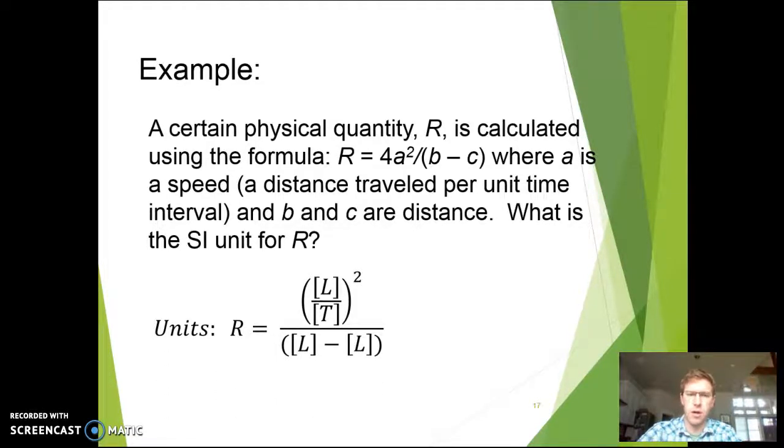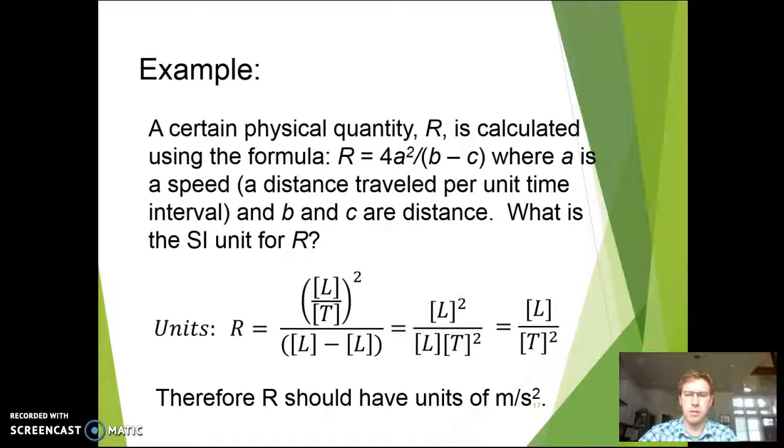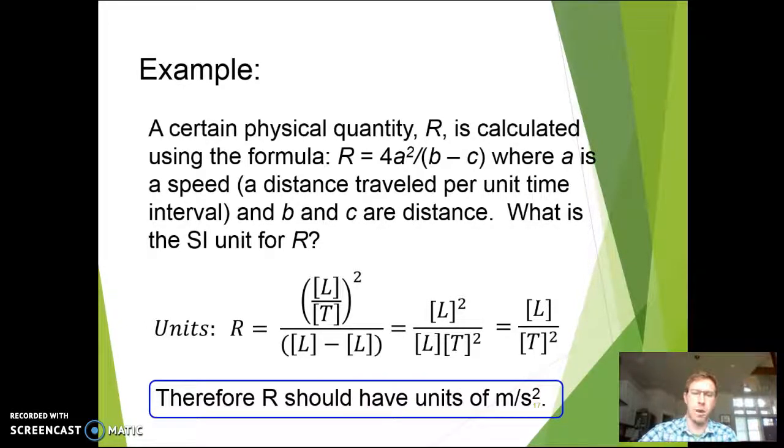So, the units for R, we have 4, which doesn't have units, then we have A squared. A is a speed, so we have length over time, quantity squared. All right, then we have units of length minus length. So on top, we have length squared over time squared, and on bottom, length minus length. A lot of people want to say, oh, then you have no units there. No, you still have units of length, right? Five meters minus two meters gives you three meters, not just three. So we got meters on the bottom, or length, and so we have length squared on top, divided by time squared, which I moved to the bottom, and then we still have that unit of length on the bottom. So one of the lengths will cancel out, and we get length over time squared. So the units for R should be meters per second squared, which are the units for acceleration. And again, boxworthy answer.